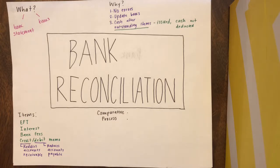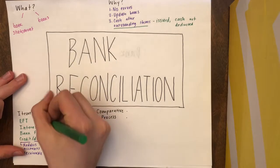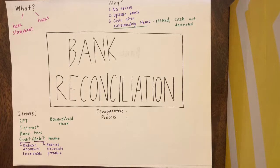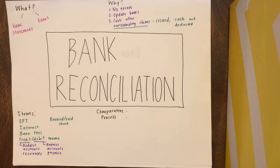One last thing that can be used in bank reconciliation is bounced or voided checks. As you can see, there are a lot of issues with checks. This is when there's not enough money in the checking account to cover the payment by the person who issues the check. A bounced or voided check is also called an NSF check, which means non-sufficient funds — the person issuing the check does not have sufficient funds to cover the amount on the check.